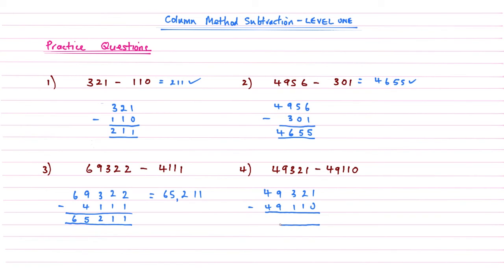1 subtract nothing well that's going to give me 1, 2 subtract 1 is 1, 100's column 3 subtract 1 gives me 2, and then 9 subtract 9 is nothing, 4 subtract 4 is nothing. Because we don't really write zeros in the front of a number, the answer to this one is going to be 211.